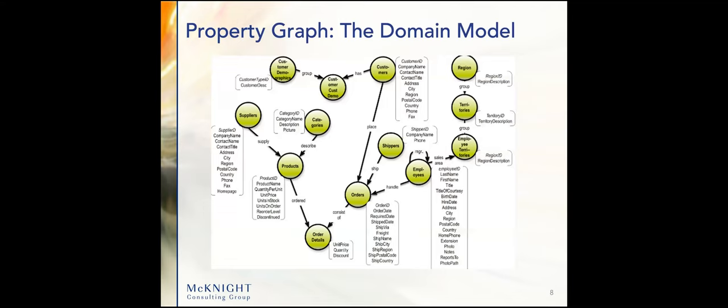If you're wading into graph databases, you've got to choose between a property graph or a semantic graph. For property graphs, you have entities, which are the vertices — also called nodes — and you have the links between them, which are called relationships, also known as edges. Nodes and relationships, or vertices and edges, can also contain properties and attributes, as you see in a domain model. Neo4j and TigerGraph are very much in the property graph area.